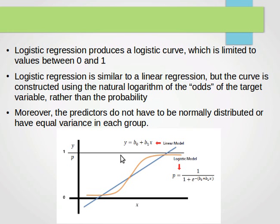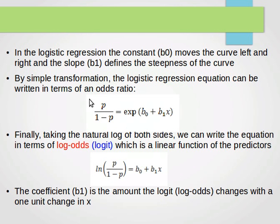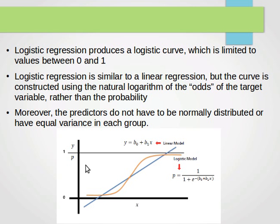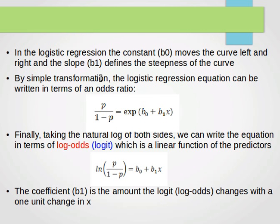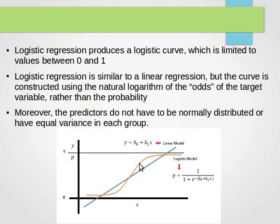In logistic regression, the constant b0 moves the curve left and right, whereas the slope b1 defines the steepness of the curve. This is similar to linear regression where b0 is the intercept, which is the y value when x is 0, and b1 is the slope, how steep the line is. For the curve here, b0 judges where this line is, either to the left or right, and b1 judges how steep this part of the curve is.